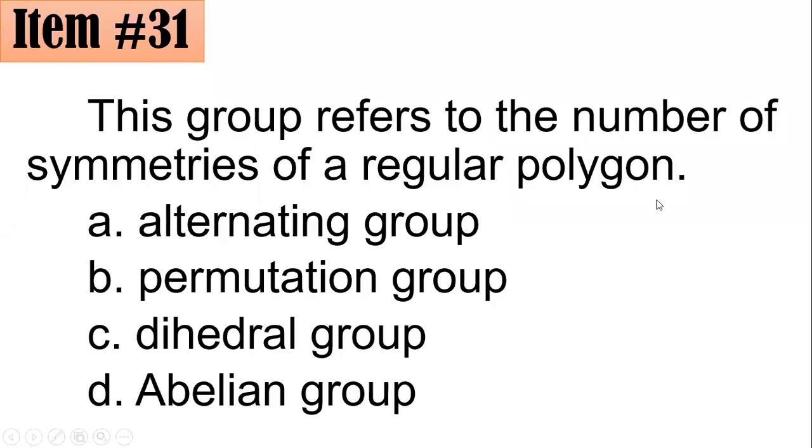Let's move on to item number 31. This group refers to the number of symmetries of a regular polygon. Is it alternating, permutation, dihedral, or abelian group? What's your answer?